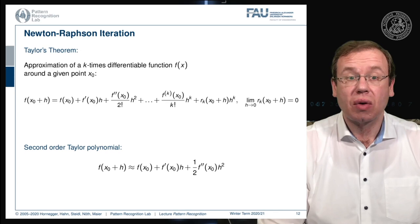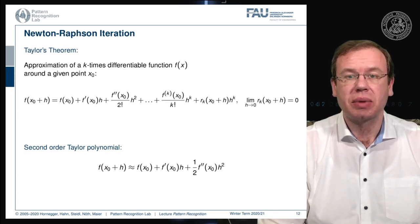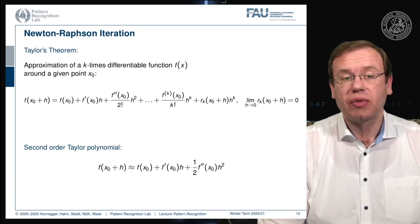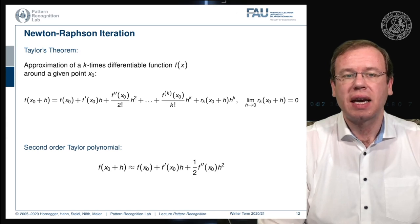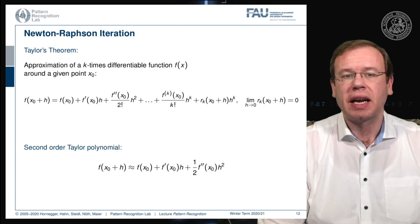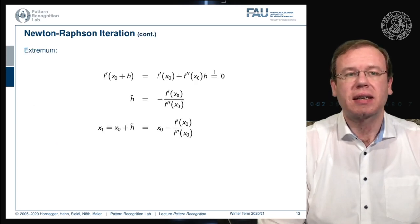We can look at this approximation and compute the derivative with respect to h. If we do so, the first term cancels out, and we can see that h will go away and h squared will essentially be converted to h. And exactly this is what we find on the next slide.